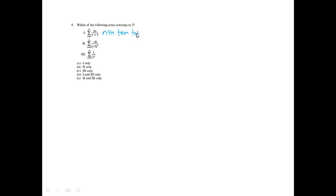Number 9: which of the following series converge to 2? We basically need to find the sum if possible. For this first one, I'm going to show that it's not even going to converge. Using the nth term test — finding the limit as n approaches infinity — if I let n approach infinity, I'll get infinity over infinity, so I'll use L'Hôpital's rule. I get 2 over 1, which equals 2. Since this doesn't equal 0, the series diverges.